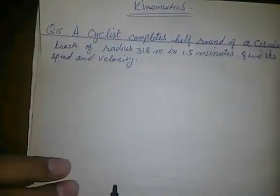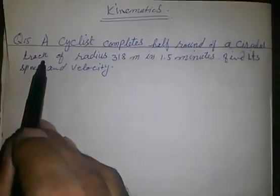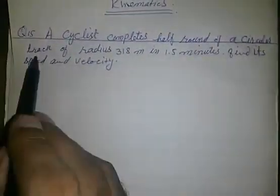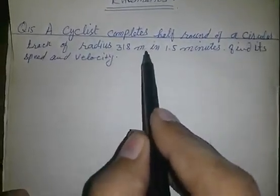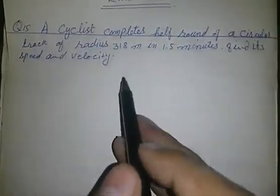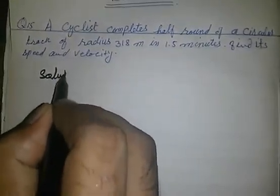Today we are solving a problem from physics kinematics. A cyclist completes half round of a circular track of radius 318 meters in 1.5 minutes. Find its speed and velocity. Let's solve this.